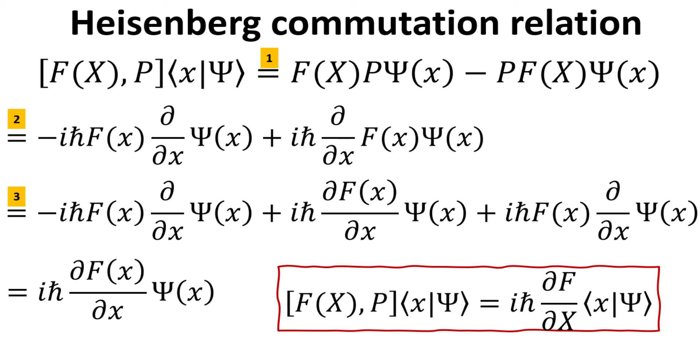Finally, we end up with iℏ multiplied by the differentiation of F with respect to x, and multiplied by the wave function. The final result is written again in the red box.